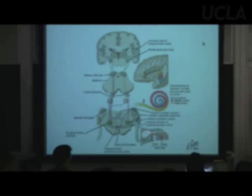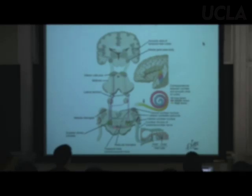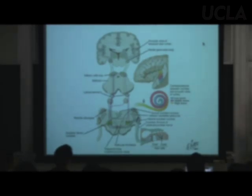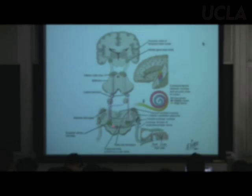The dorsal or ventral cochlear nucleus sends axons across the midline. When the ventral cochlear nucleus sends axons across the midline, it forms the trapezoid body — something you've already seen in lab. The trapezoid body is in the metencephalon.